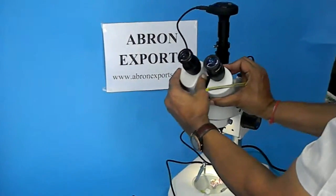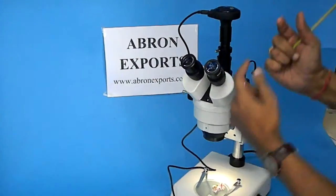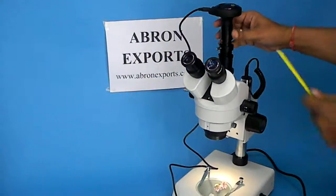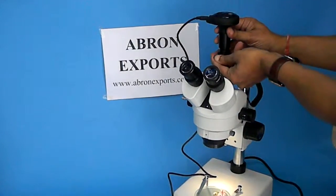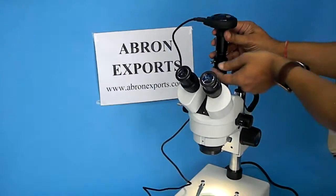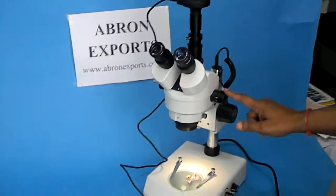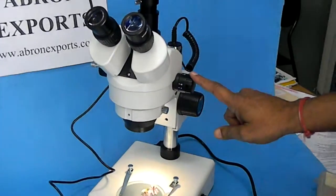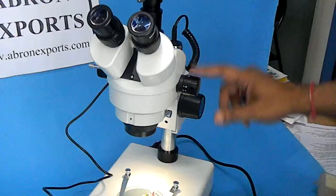This is for interpupillary distance. You can adjust as per your eye. This is for adjusting the camera, putting the camera on the third eye. And this is a zoom for selection of the microscope.